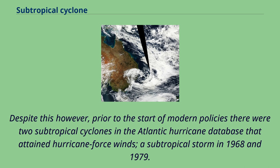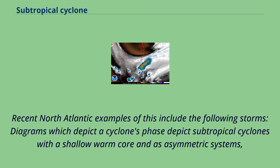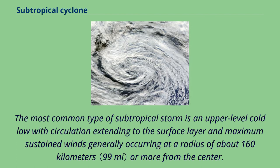Despite this, prior to the start of modern policies there were two subtropical cyclones in the Atlantic hurricane database that attained hurricane force winds: a subtropical storm in 1968 and 1979. Subtropical cyclones are also more likely than tropical cyclones to form outside of a region's designated hurricane season. Cyclone phase diagrams depict subtropical cyclones with a shallow warm core and as asymmetric systems, similar to tropical cyclones which have begun the transition to an extratropical cyclone. The most common type of subtropical storm is an upper-level cold low with circulation extending to the surface layer and maximum sustained winds generally occurring at a radius of about 160 km or more from the center.